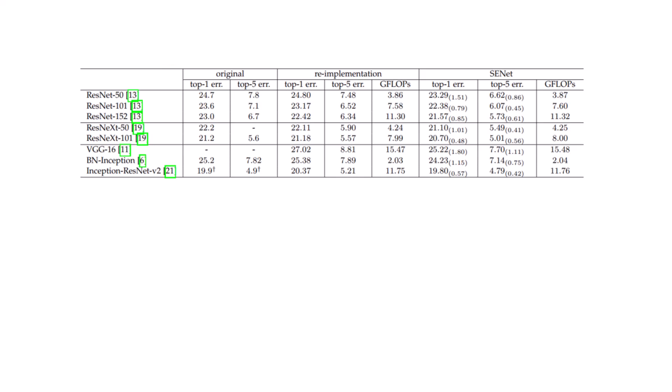if we add squeeze and excitation to ResNet-50, before that, the top one error is 24.80, but it increases to become 23.29, which is quite noteworthy, because now it can compete with ResNet-101, that has like two times more channels, and its gigaflops is 7.58, while for ResNet-50 it's 3.87. So while having like half of the complexity, and the runtime is much much faster, we are getting some kind of the same results, which is quite amazing.